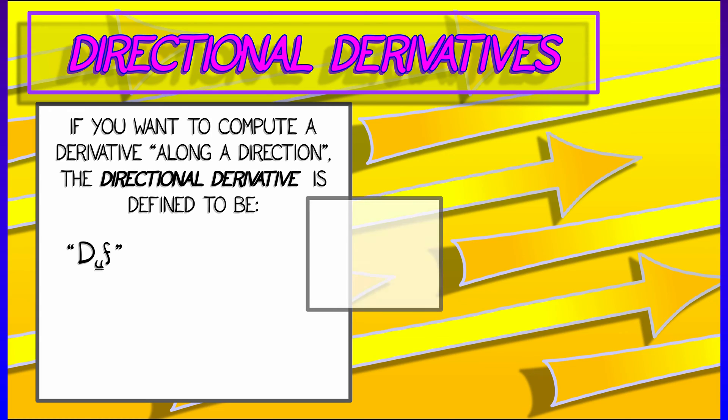You encode that direction as a unit vector u, and then you simply take the dot product of the gradient of f with u—that is often denoted d_u of f and called the directional derivative.